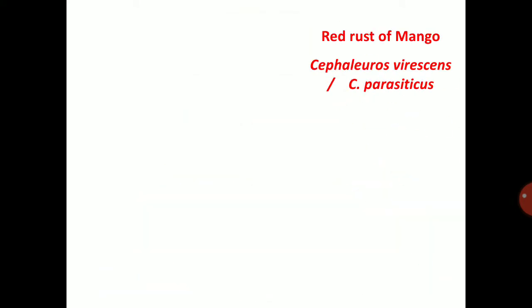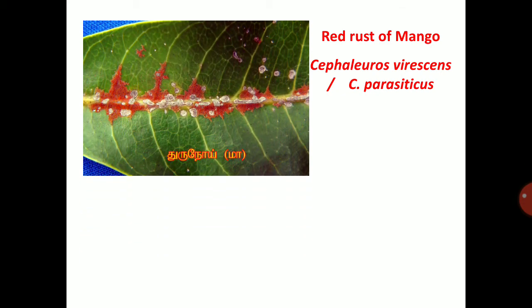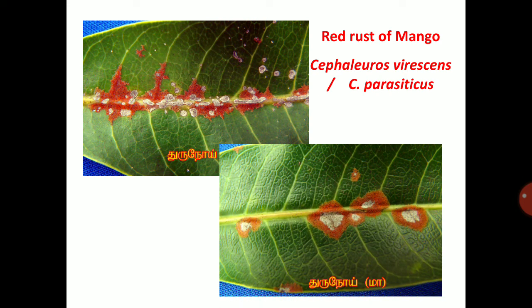Algae mainly infect fruit trees. One important disease caused by algae is red rust of mango, caused by Cephaleuros virescens or Cephaleuros parasiticus. It produces red to pale green colour raised patches on infected leaves and stem. This is considered a true alga of mango. It produces pale green colour lesions due to its chlorophyll content. Algae contain chlorophyll and produce green colour lesions on infected leaves.